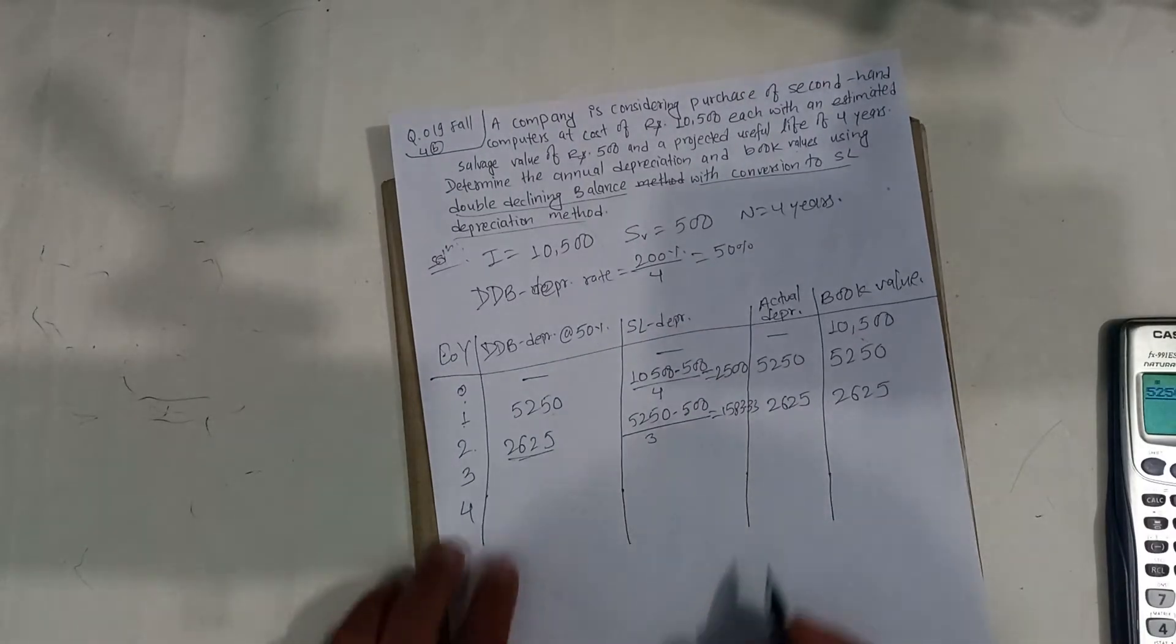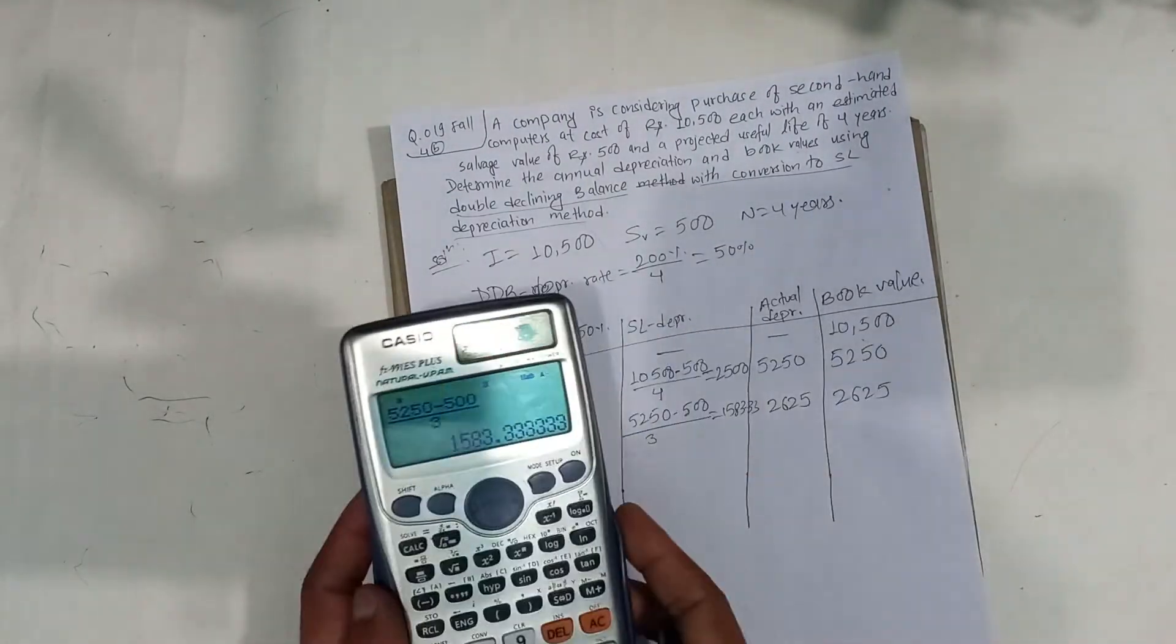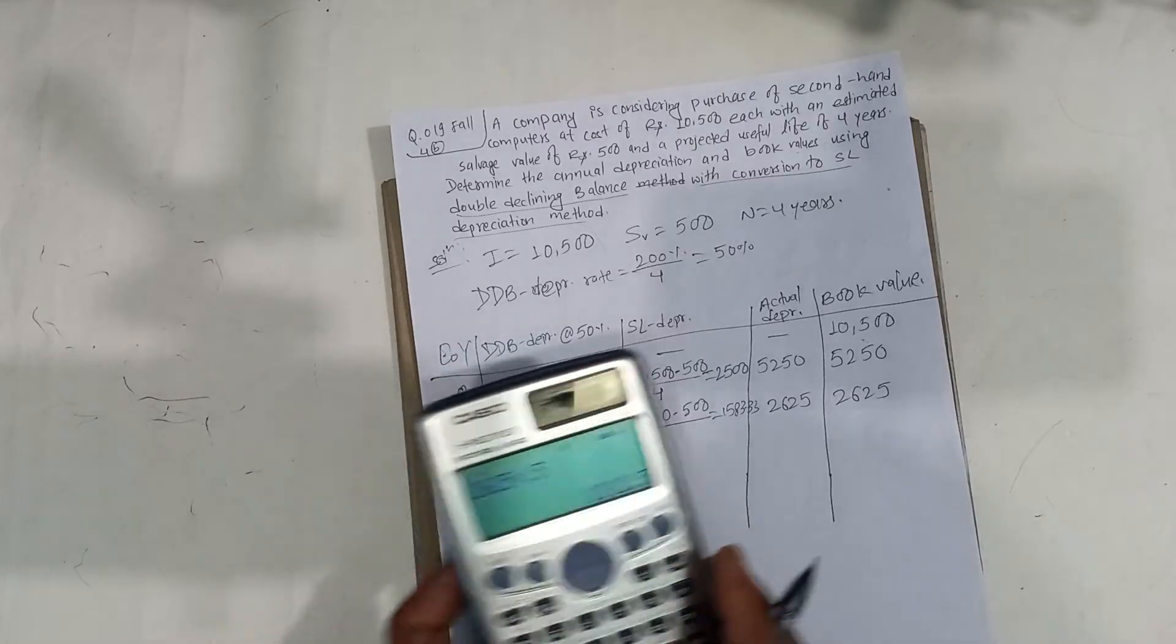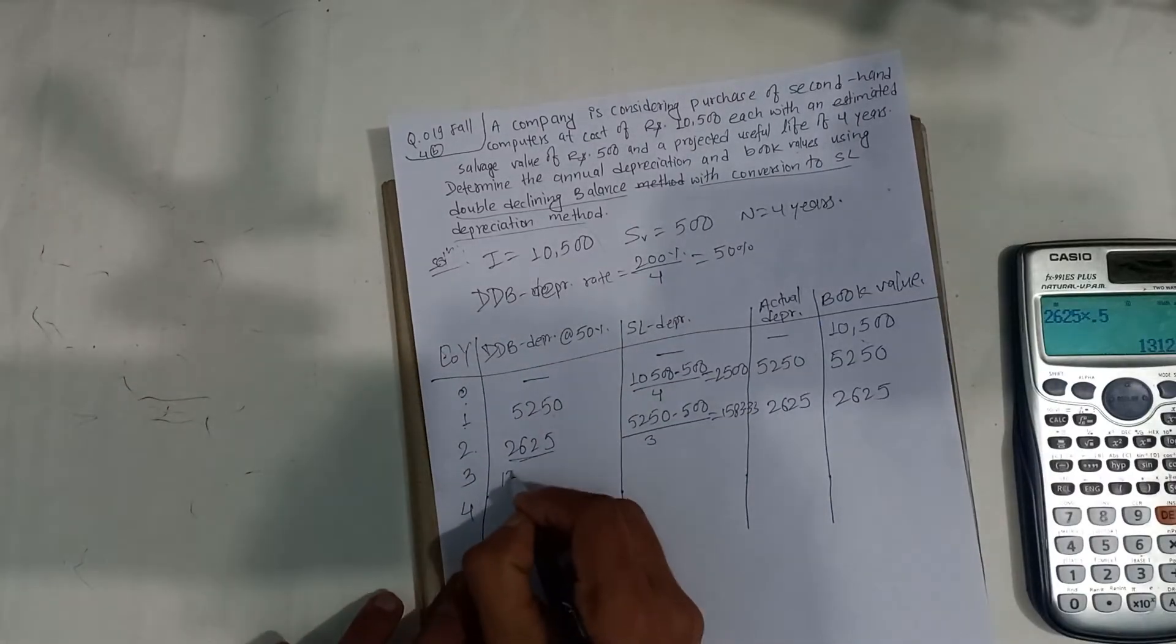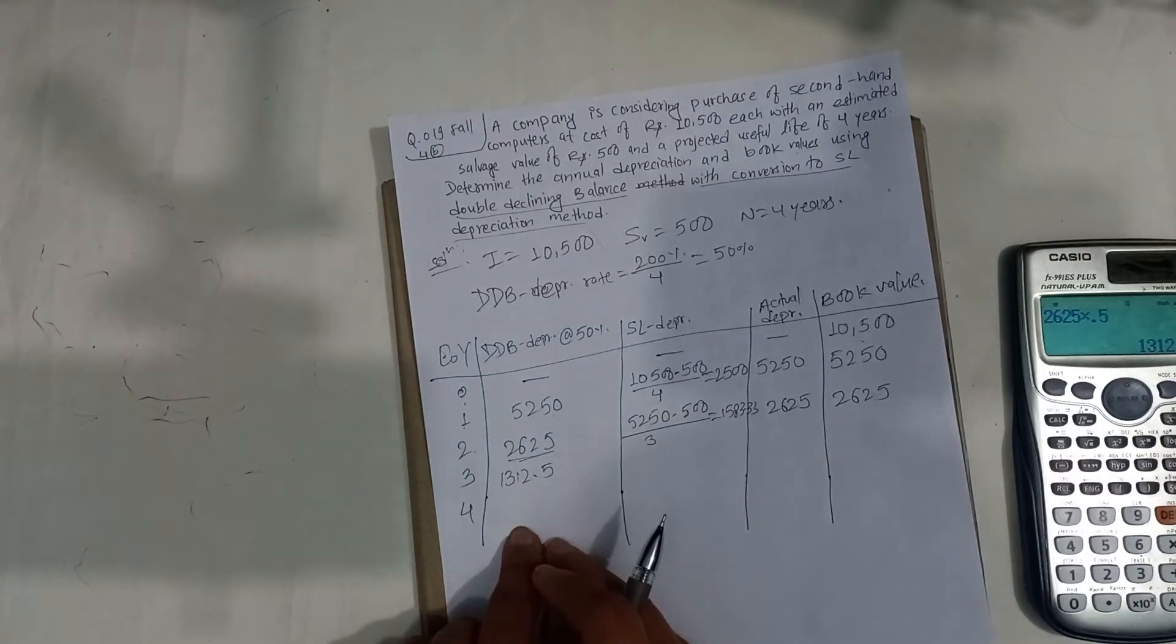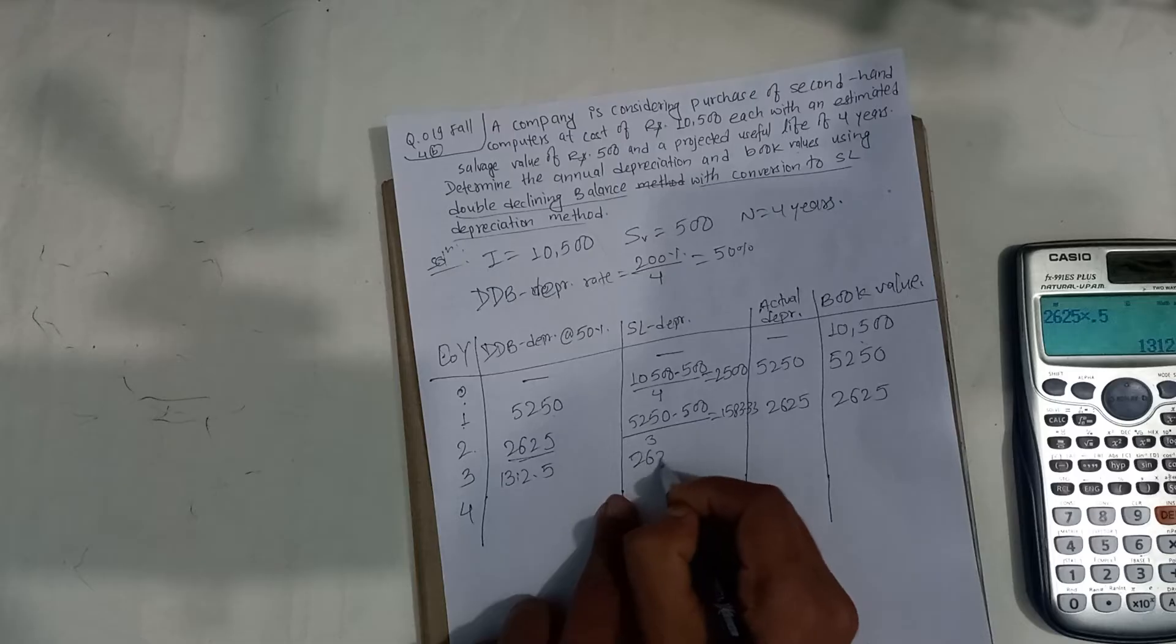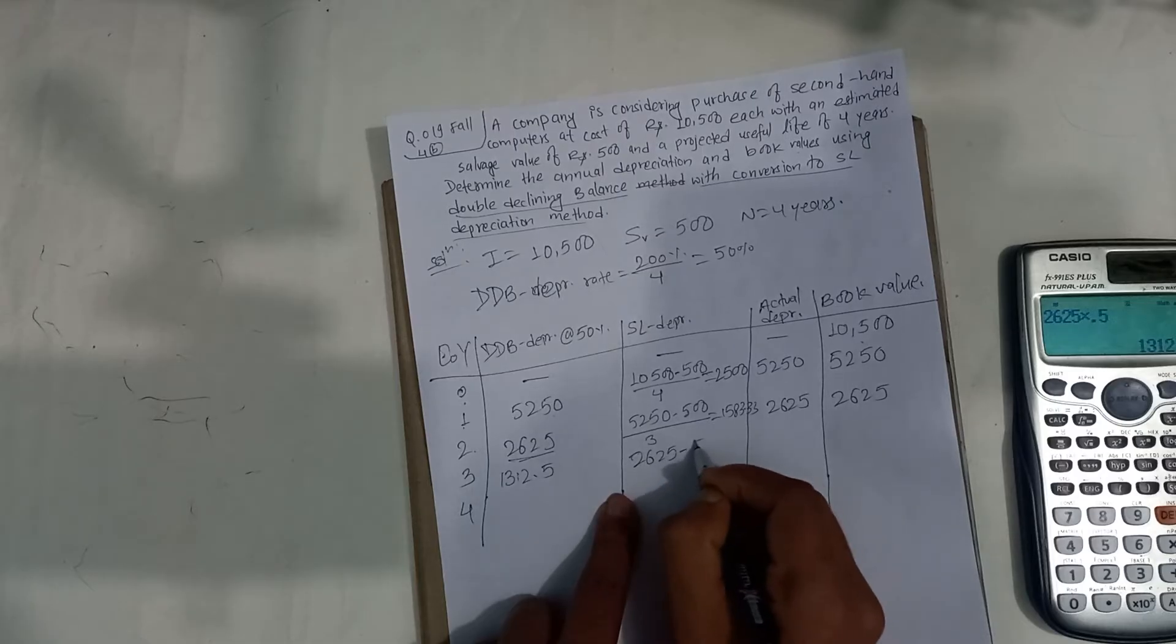Third year, let's do this. 2,625 times 50% equals 1,312.50 for double declining method. SL depreciation: 2,625 minus 500.